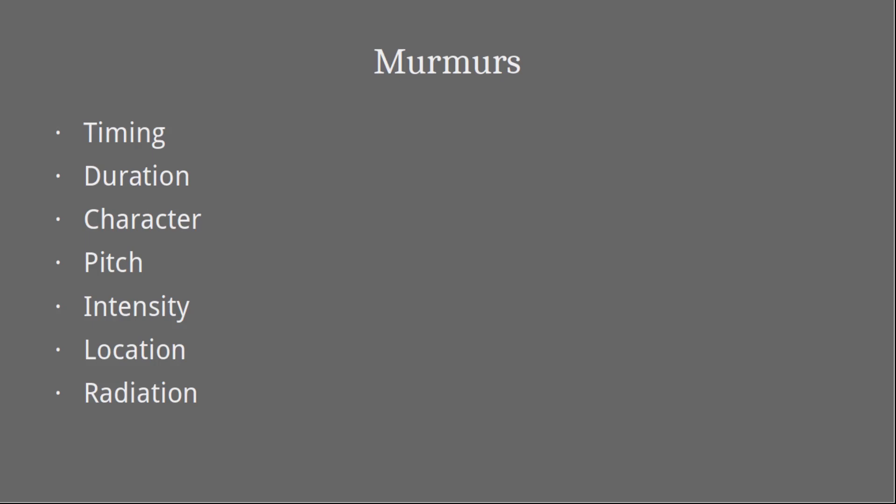To remember the timing of a murmur, analyze whether it is occurring due to blood flow into the ventricles or out of the ventricles. If blood flow is occurring out of the ventricles, the murmur will be systolic. If blood flow is occurring into the ventricles, the murmur will be diastolic. For example, in mitral stenosis, the murmur occurs as blood flows from atria to ventricles, so it is diastolic. In aortic regurgitation, blood flows from the aorta to the ventricles — again diastolic. In mitral regurgitation, blood flows from ventricles to the atrium — systolic. In aortic stenosis, blood moves from ventricles to the aorta — systolic.